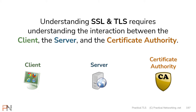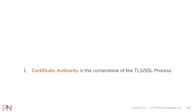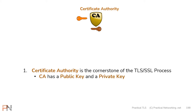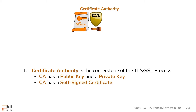It all starts with the certificate authority — the certificate authority is the cornerstone of the entire process. The CA has its own asymmetric key pair, that is a public key and a private key. In addition, the certificate authority also has a self-signed certificate; this certificate affirms the identity of this particular certificate authority.